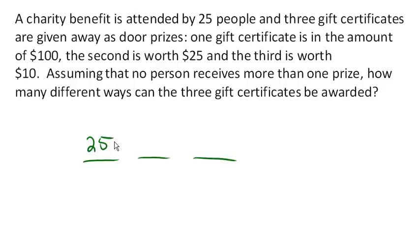How about for the second one, for the $25 prize? Well, there's no repeats, right? No person receives more than one prize. So there's only 24 people now. And for the last prize, for the $10 prize, there's 23 people. And so we end up with 13,800 different ways that these prizes could be awarded.